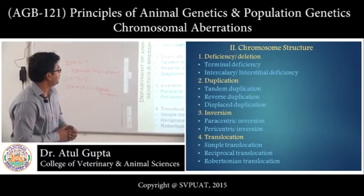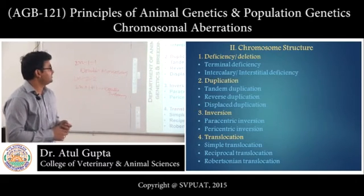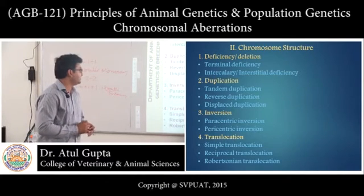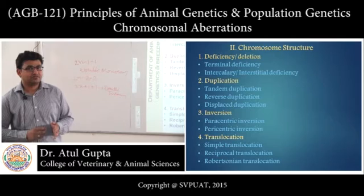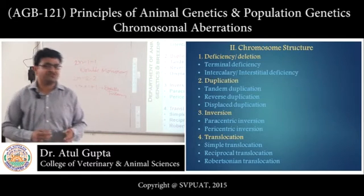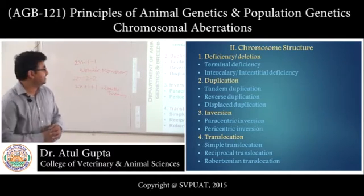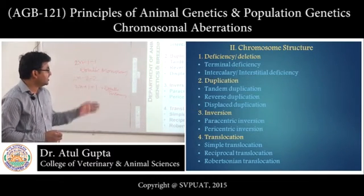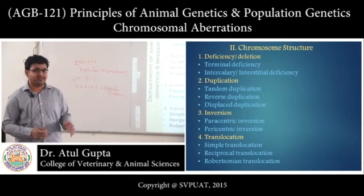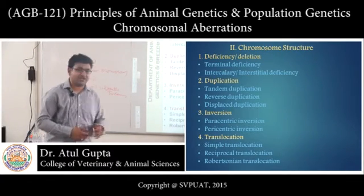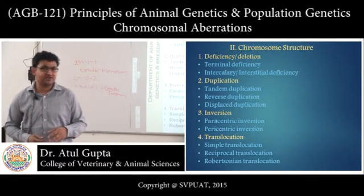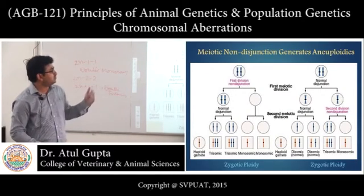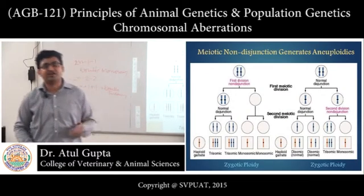Now we will look at changes in chromosome structure. The main types are: first, deficiency or deletion — terminal deficiency and intercalary or interstitial deficiency; second, duplication — of tandem, reverse tandem, and displaced types; third, inversion — paracentric and pericentric; and fourth, translocation — simple translocation, reciprocal translocation, and Robertsonian translocation.